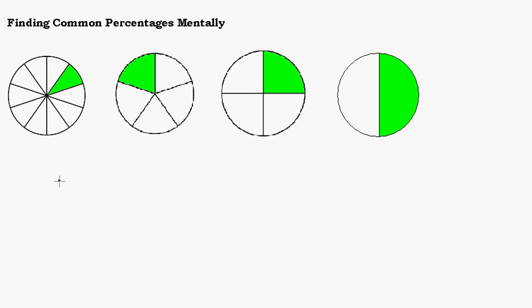So I have some pictures up here and each one of these pictures represents a certain percentage. Hopefully you can look at some of these and figure out what percent is being represented by the green colored slice. Let's look at the easiest one over here. How about this one? This is 50%. 50% of our circle is shaded.